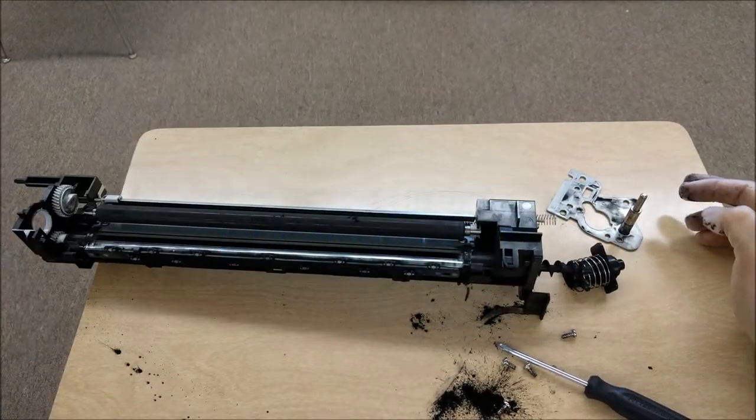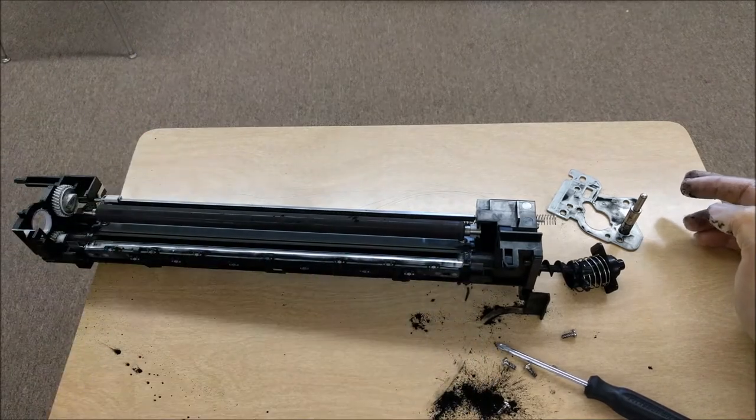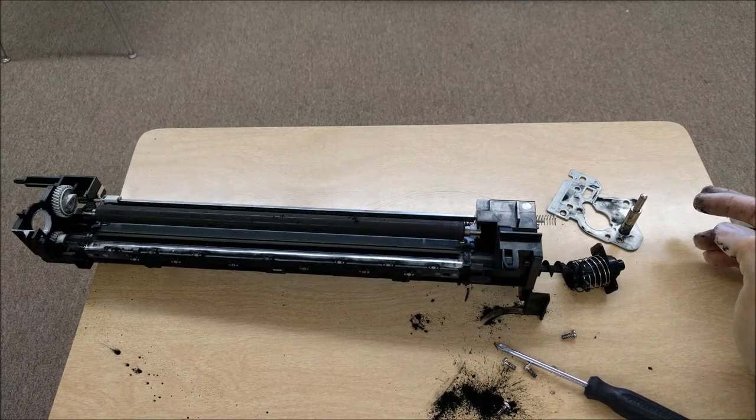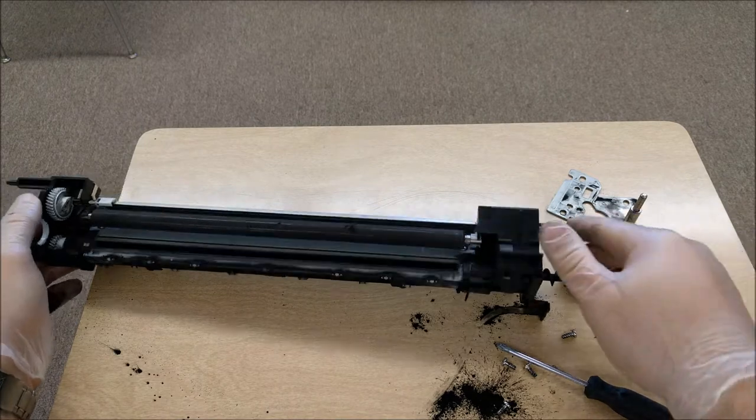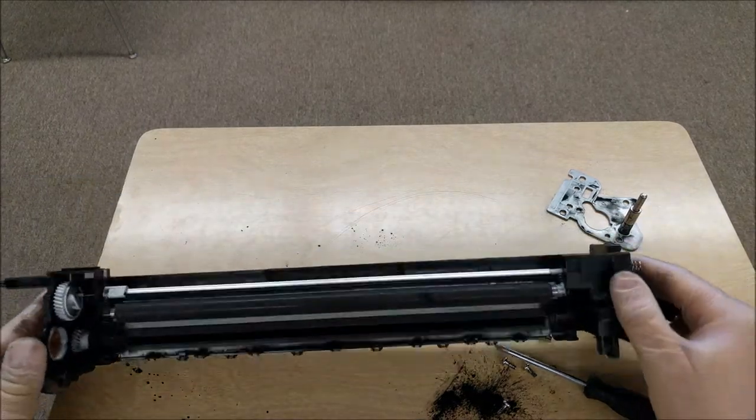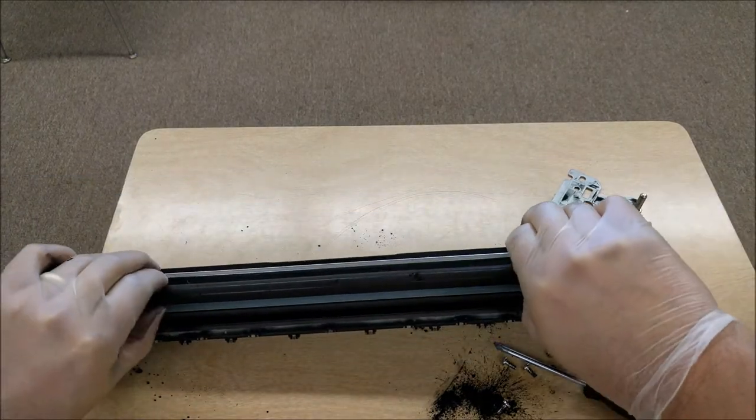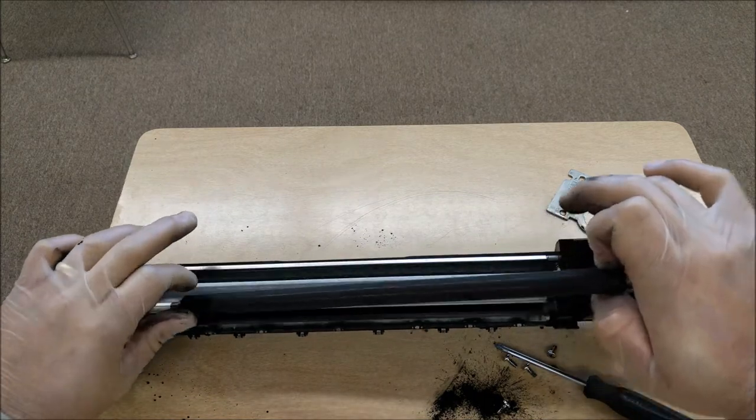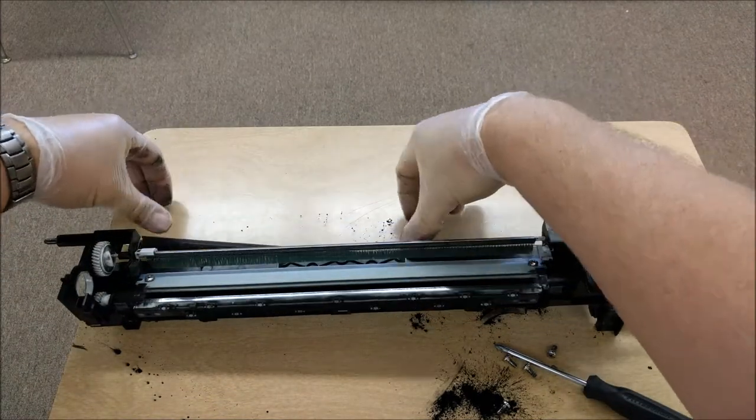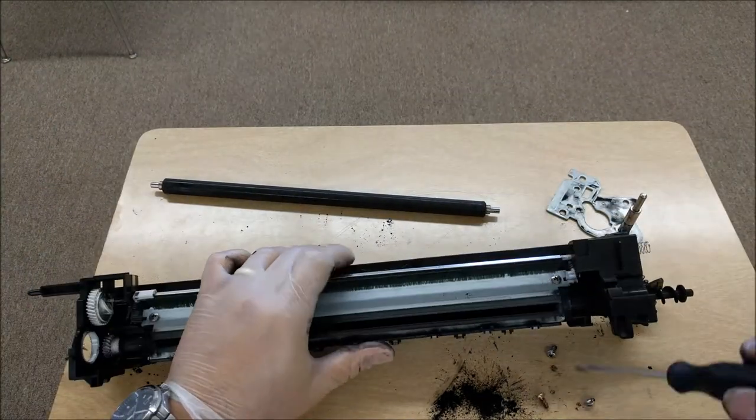Go ahead and just remove the old drum, and you can throw that away. Now if you're going to replace that scraper that came with it, you're going to pop out that roller and there are two screws holding the scraper in.